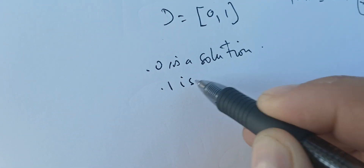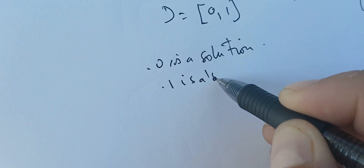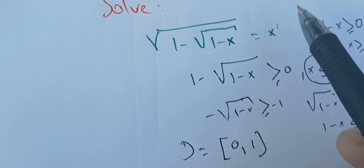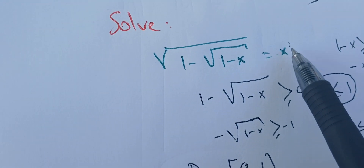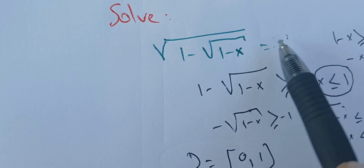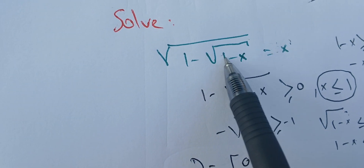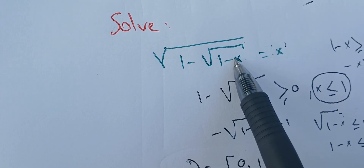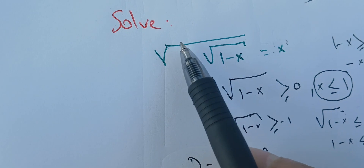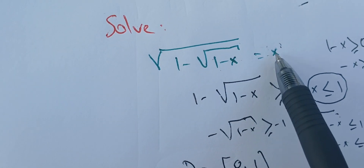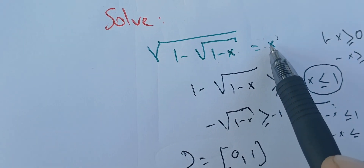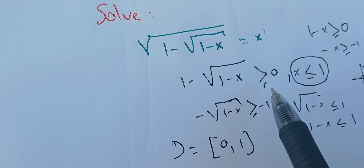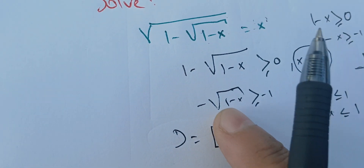Next, x = 1 is also a solution. If we put x = 1, we get 1 − 1 = 0, and √0 = 0, then 1 − 0 = 1, and √1 = 1, which equals 1. Therefore, x = 1 is a solution, and it is in the domain.